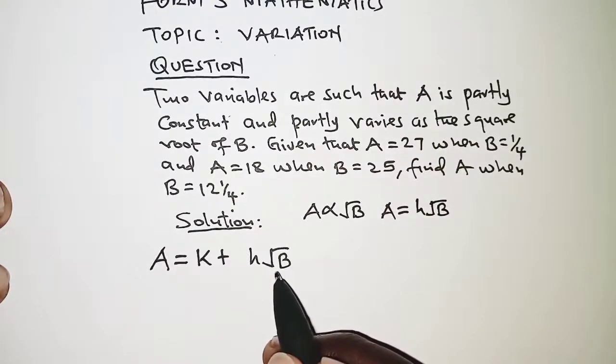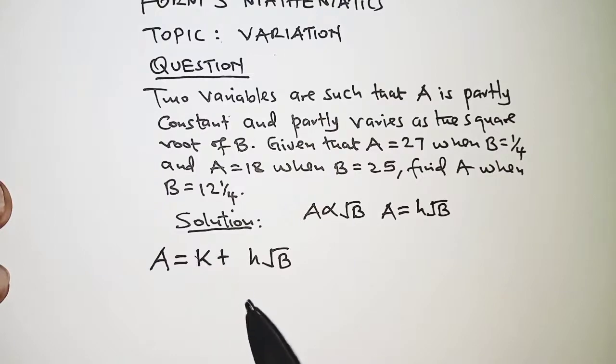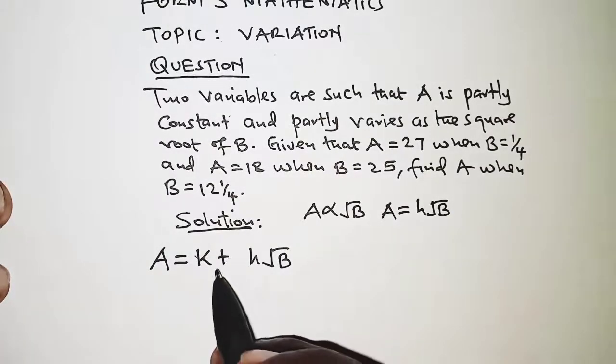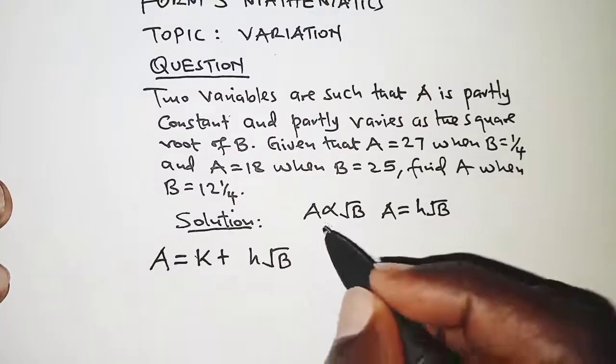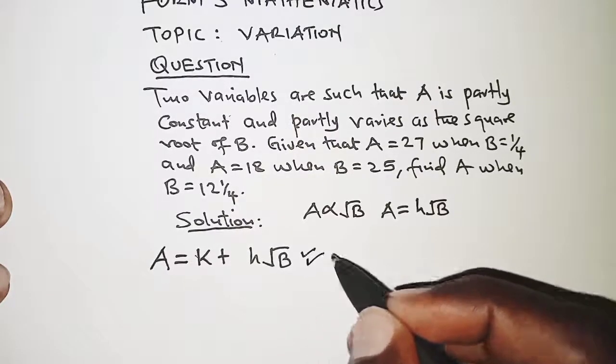That is why we have this at this point, but for the other case A is just constant. That's why you have k here. Partial variation is identified by an addition sign in an equation.